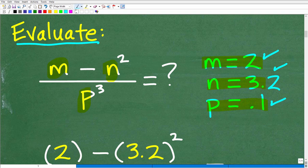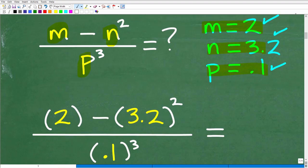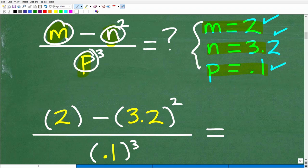Before you get going and just start doing busy work, what you want to do is, and this is really important, is plug in the values. You're going to replace these variables with the respective values. But I'm going to strongly suggest that you get used to using parentheses. So use parentheses, plug in these values. So m is 2, put parentheses 2 minus, n is 3.2, parentheses 3.2, that parentheses squared, and then p is 0.1, parentheses 0.1, all that cubed, right?